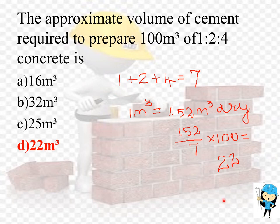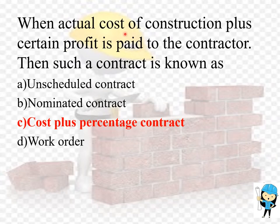When actual cost of construction plus certain profit is paid to the contractor, then such a contract is known as cost plus percentage contract.